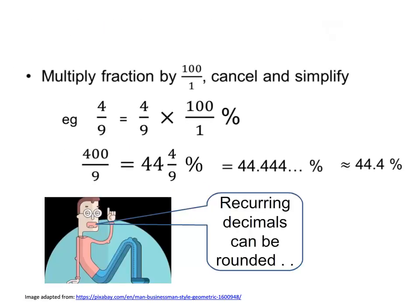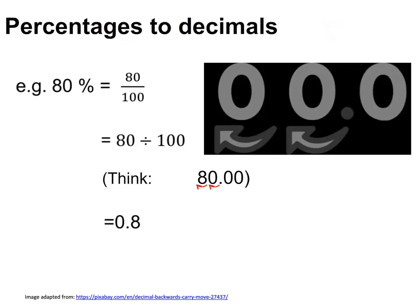If we can't cancel, we simply multiply the two top numbers together and the bottom numbers together and then simplify. Remember the usual rules for rounding. To change a percentage to a decimal, divide the percentage number by 100 by moving the decimal point two places to the left.